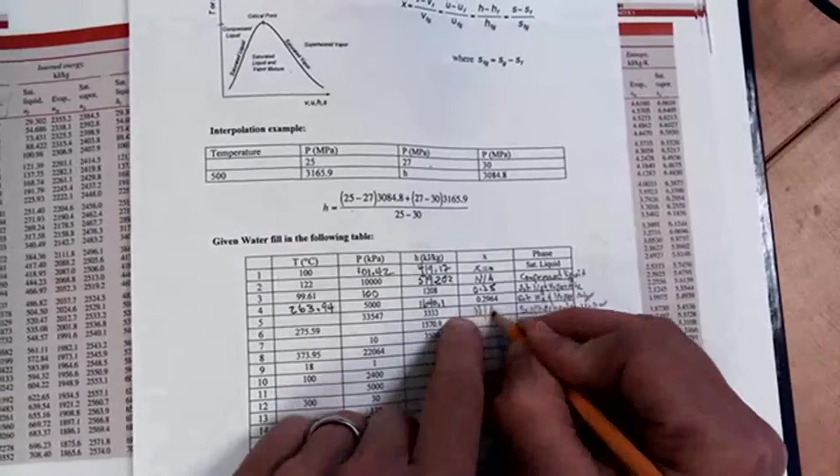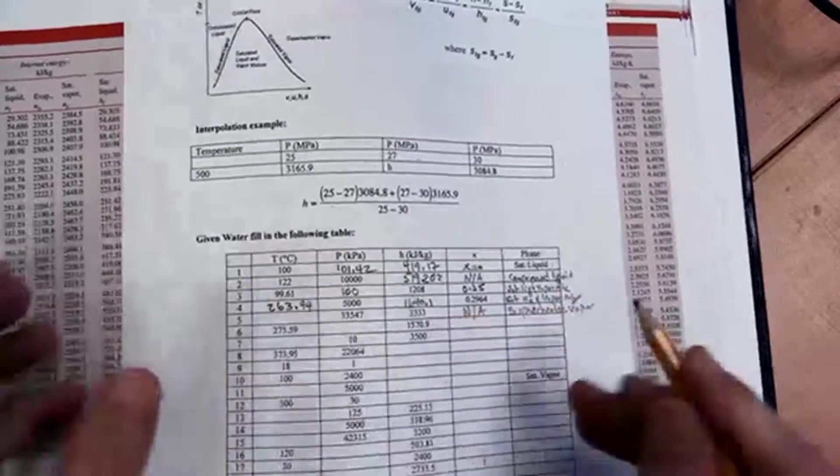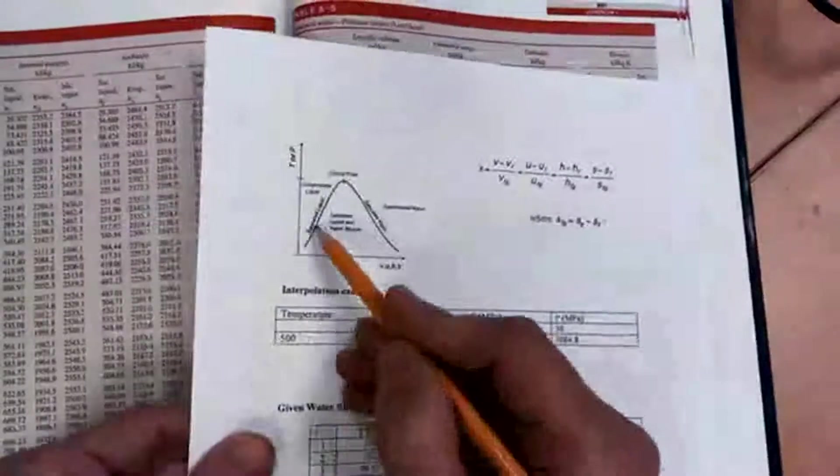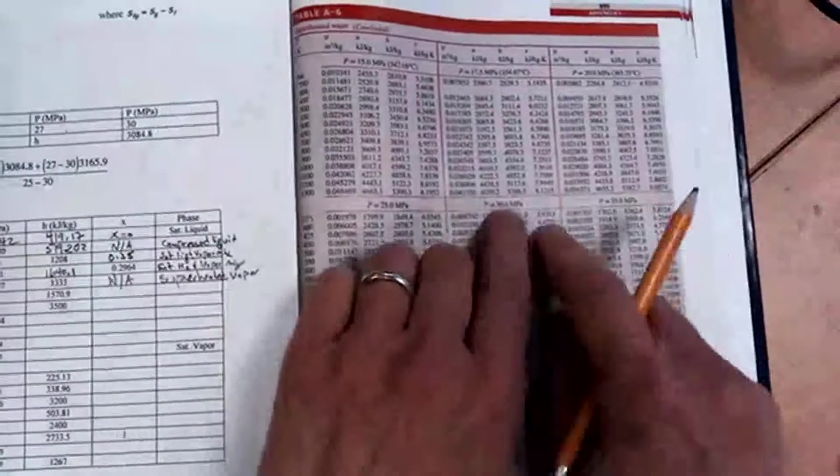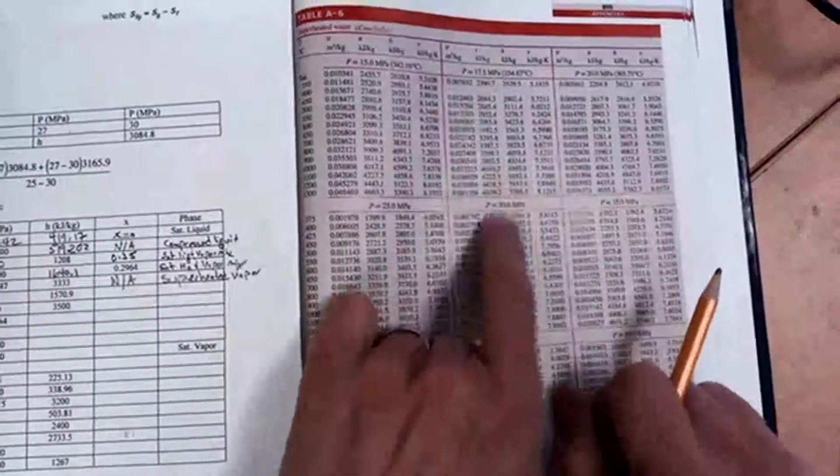And quality is not applicable, right? Because we're not under the dome at all. It's not zero. Zero would mean it's a saturated liquid. It is not a number. So I'm going to go to the superheated water tables and look for 33 megapascals. And of course, there isn't 33 megapascals.